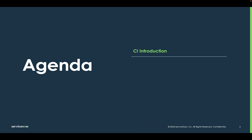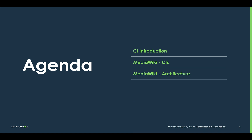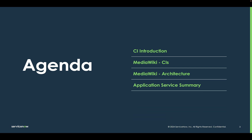We'll start with a quick introduction of the CIs and the classes in the context of our five-part series. Next, we'll look at the specific CIs of the MediaWiki business application. Following that, we'll do a brief architecture review to understand how all the pieces fit together. We'll then quickly review the population methods in the application service summary, which are the chapters of our five-part series. And finally, we'll wrap up with a live demo in my IFI instance, where I'll show you how all the CIs look in practice.